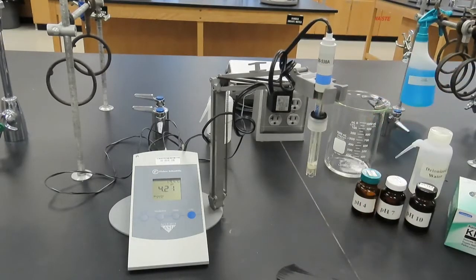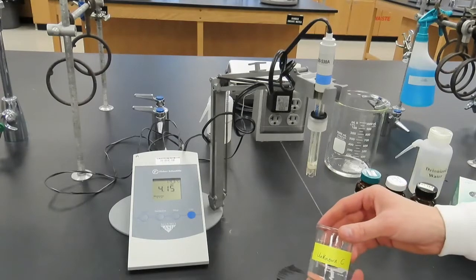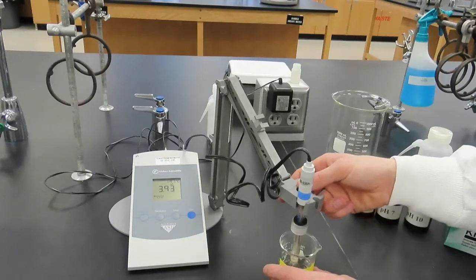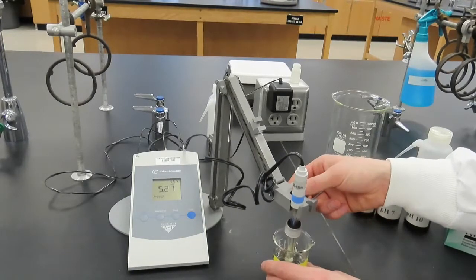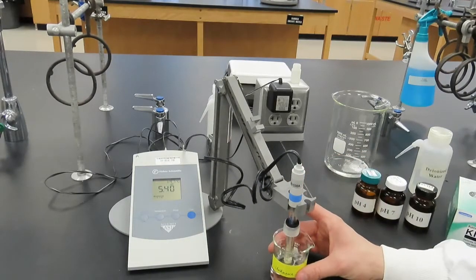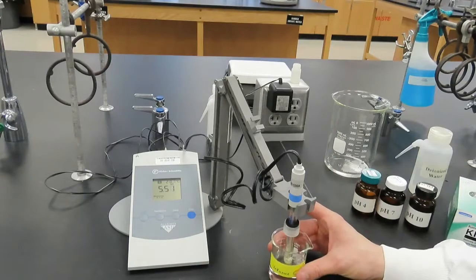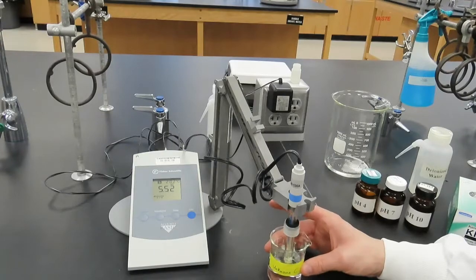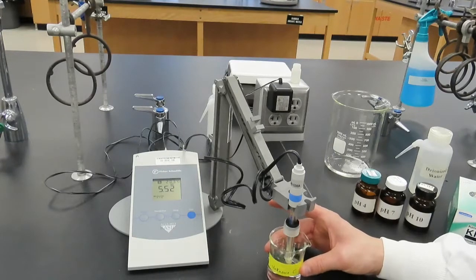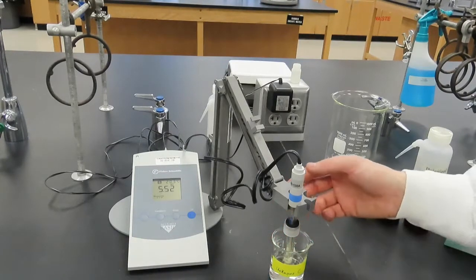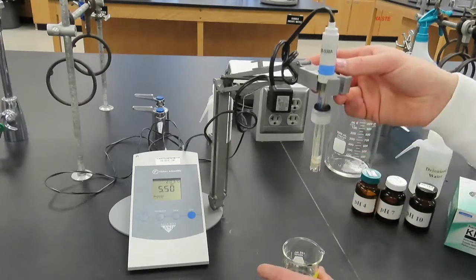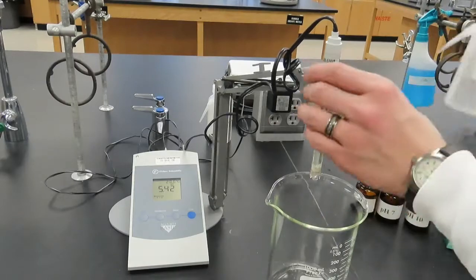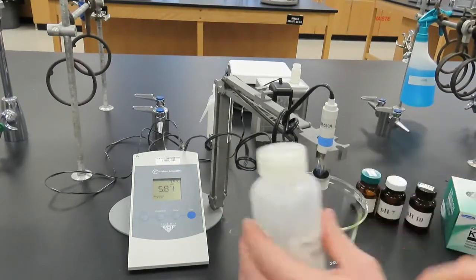We will now measure the pH of a solution labeled unknown C. We will immerse the pH electrode into this solution and swirl. The pH value when the display stabilizes is the pH of this solution, approximately 5.52. We will remove the electrode from the unknown C solution, rinse and dry it.